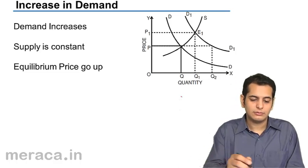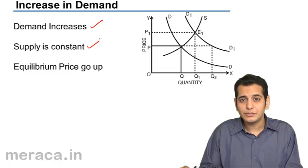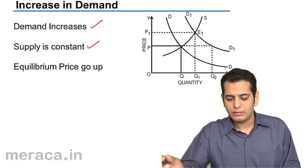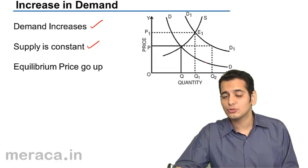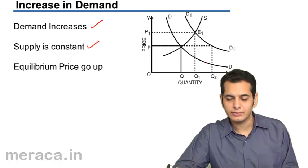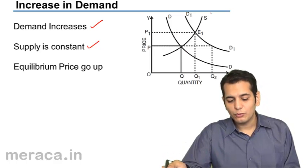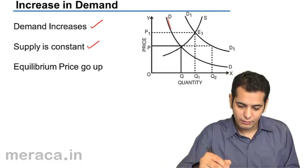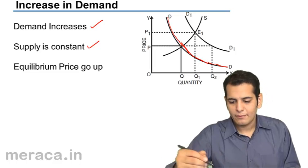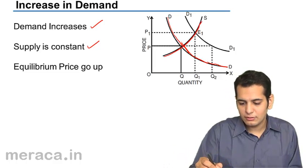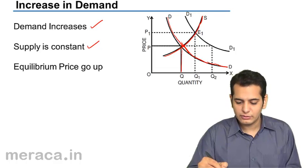Our assumptions here are the demand increases and the supply remains constant. Let us see what happens. It's a graph where quantity demanded is shown on the x-axis. The quantity supplied is also shown on the x-axis and on the y-axis we've taken price. DD is the original demand curve here and S is the original supply curve. This is the point where they meet, which gives us the equilibrium.